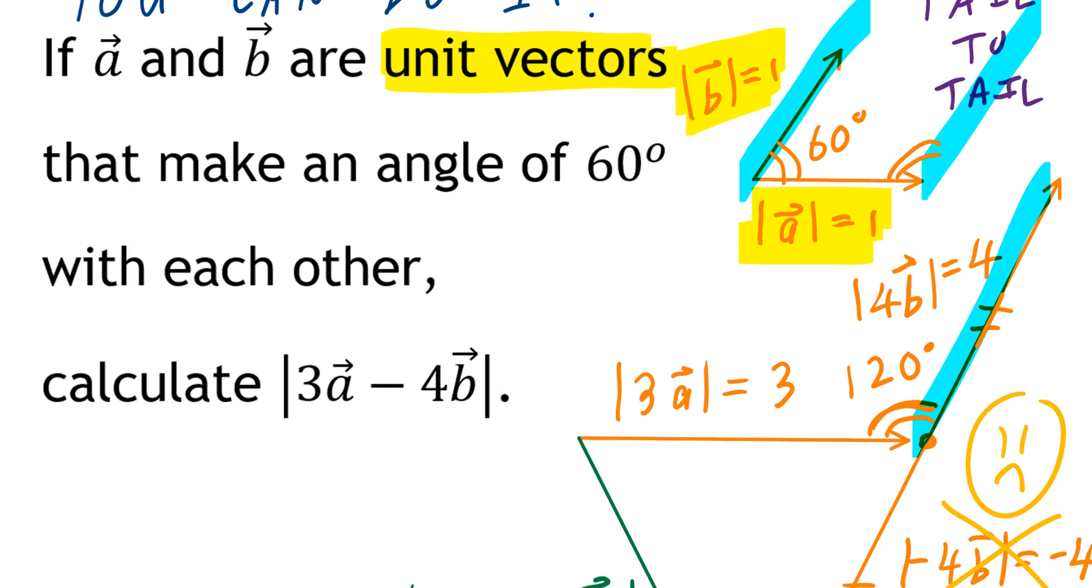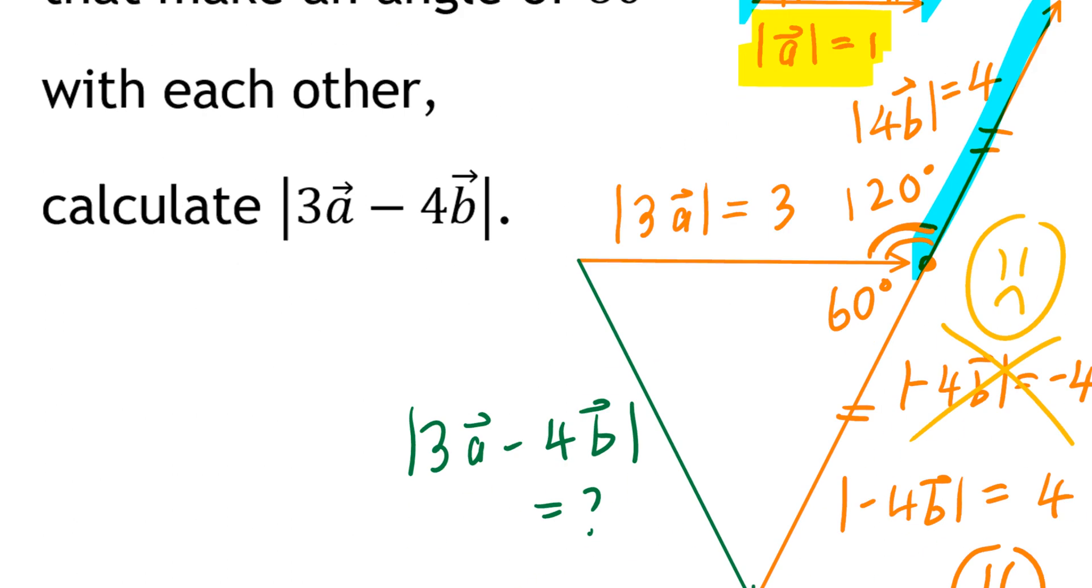Now, because this is a straight line right here, a straight line, of course, is going to be 180 degrees. 180 minus 120 is going to be 60 degrees, just like that.